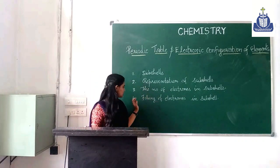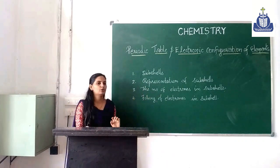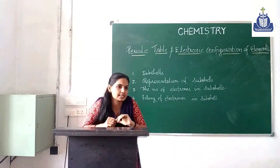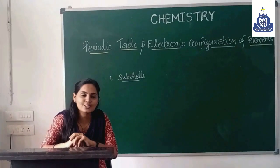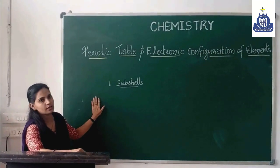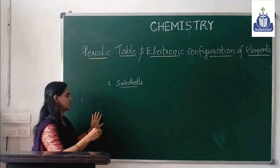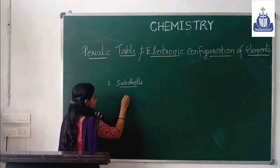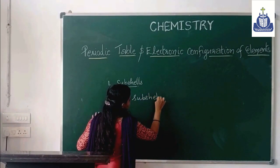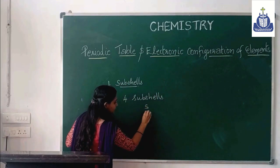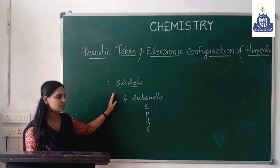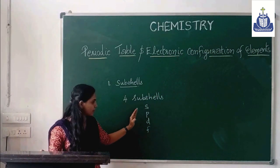In this class we will discuss four topics: subshells, representation of subshells, the number of electrons in each subshell, and the filling of electrons in the subshell. Our first topic is subshells. There are 4 subshells: S, P, D, and F.